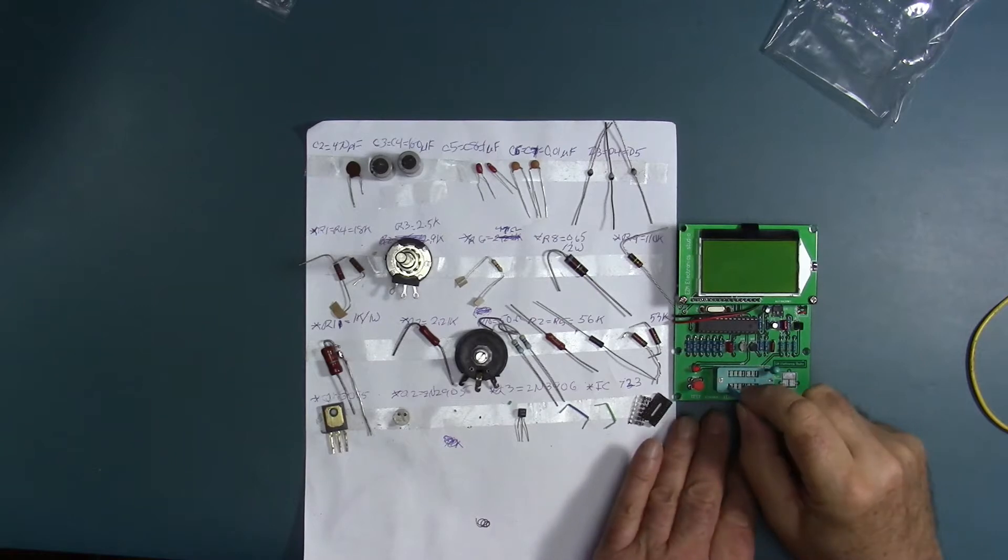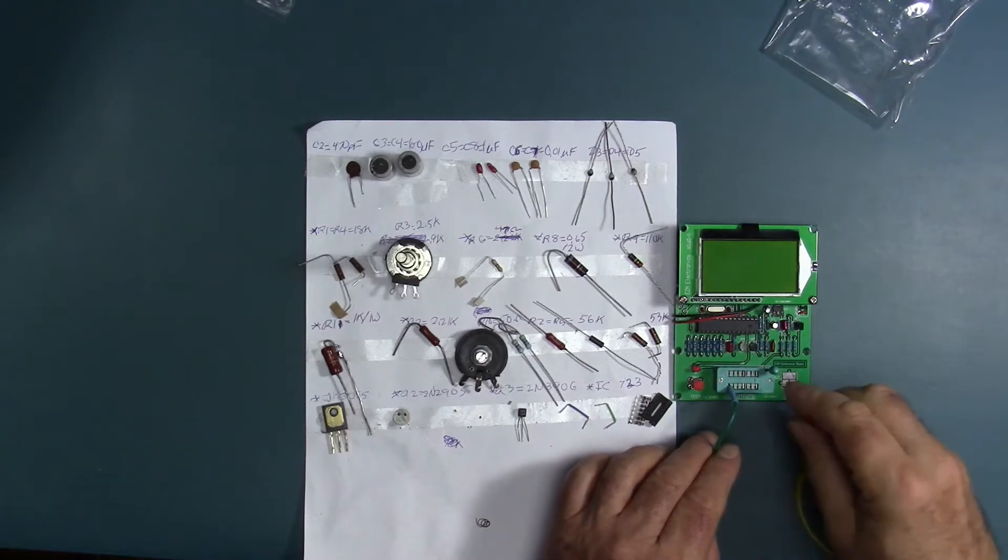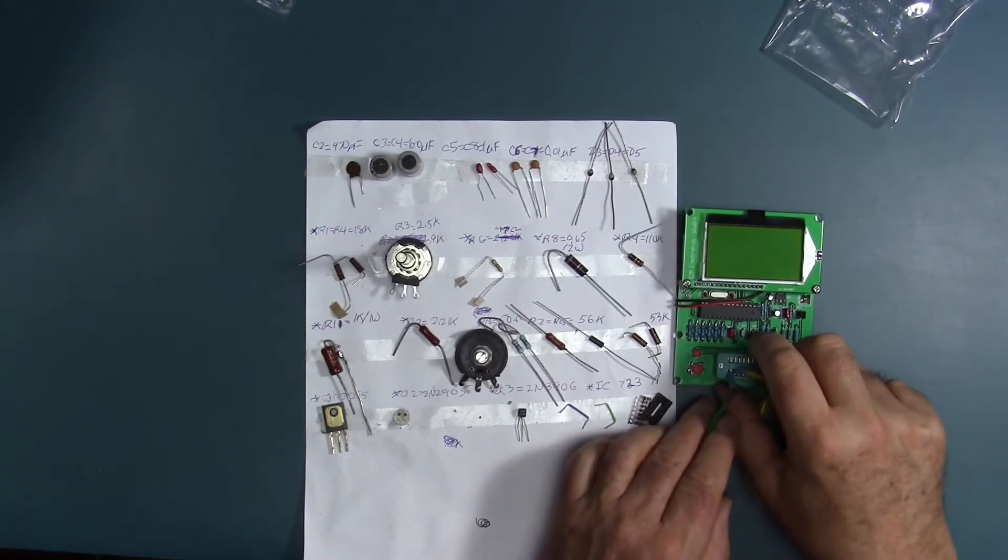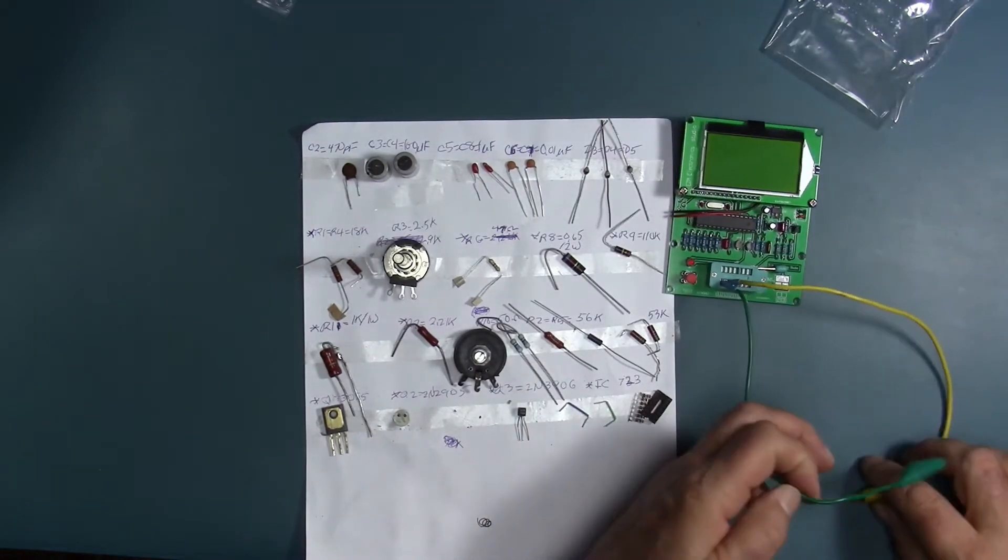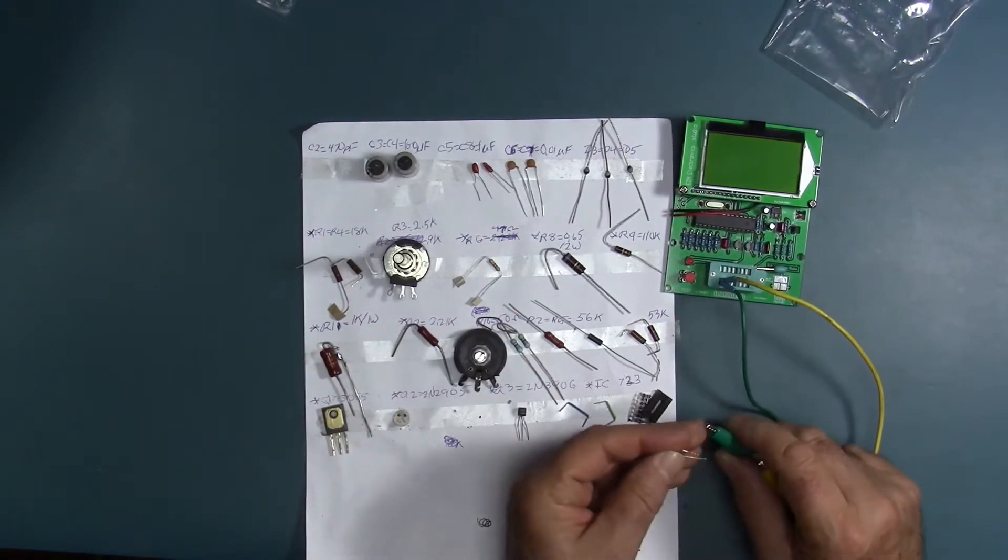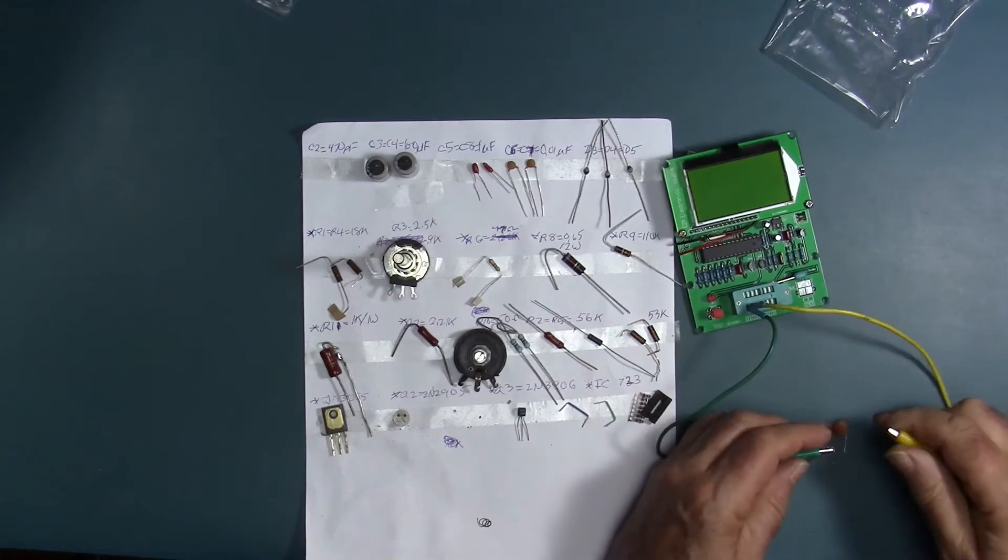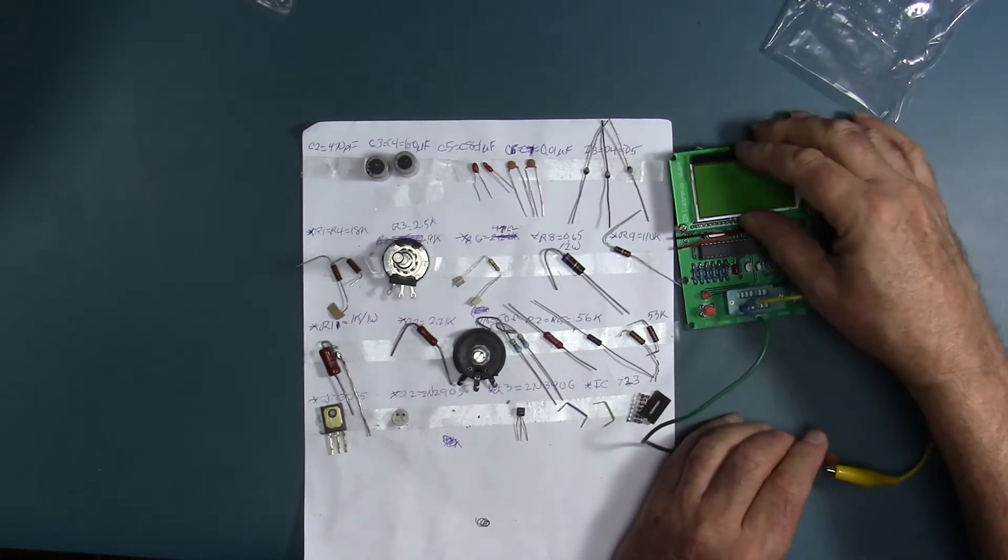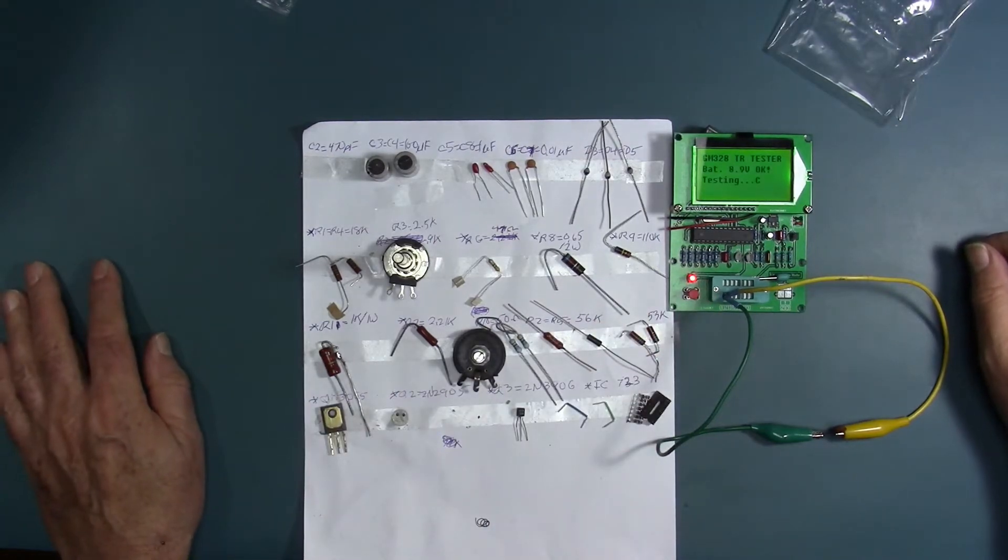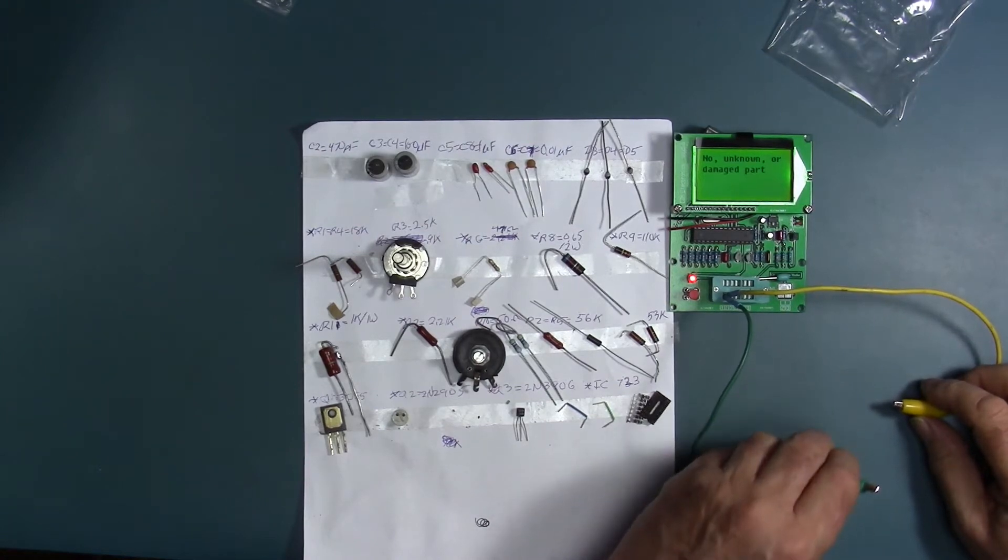I'm going to be testing every component that goes into this second board. There are a number of things I don't like about this particular implementation, not the least of which is it doesn't have a case. But I can make a case for this, more ways than one. I don't like using this zero insertion force IC socket as a means of connecting to the device. I prefer alligator clips, so I've put some alligator clips in here.